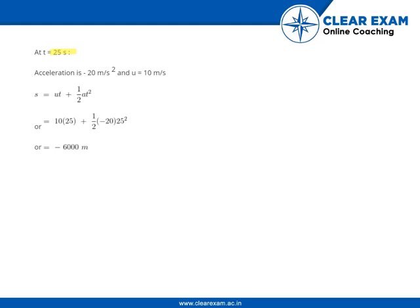At t = 25 s, acceleration is -20 m/s² and initial velocity is 10 m/s. Putting the same equation with the values, we get the distance as -6000 m.